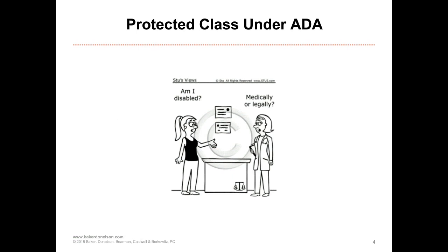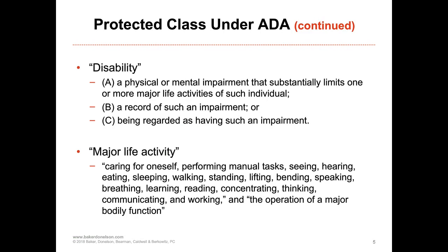In order to fall under the protected class of the ADA, a person must be disabled. The statute defines disability as a physical or mental impairment that substantially limits one or more major life activities of such individual. Major life activity is defined very broadly — it includes but is not limited to walking, standing, lifting, and operations of major bodily functions such as normal cell growth, brain, and respiratory functions. A determination of whether a major life activity is impaired is done without regard to any mitigating measures such as assistive technology and medication.